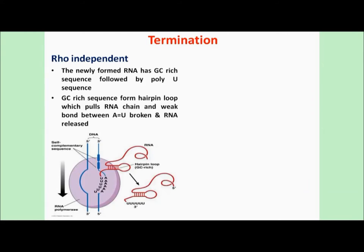In the Rho-independent pathway, the newly formed RNA has a high GC content — a GC-rich sequence — followed by a high amount of U residues at the end, also known as poly-U. The GC-rich sequence forms a hairpin-like structure due to the triple bond between G and C. This hairpin pulls the RNA away from the DNA, and the weak A-U bonds break, causing the RNA to be released after transcription.